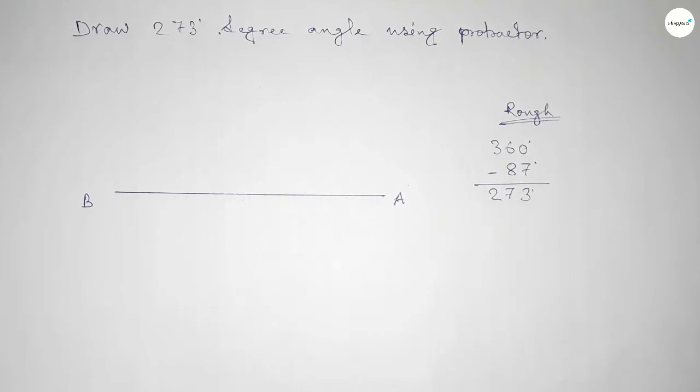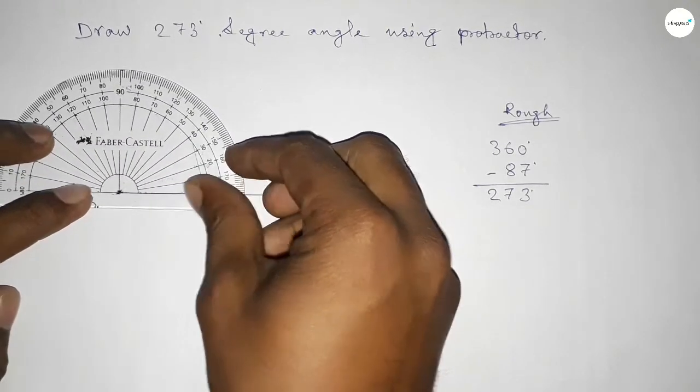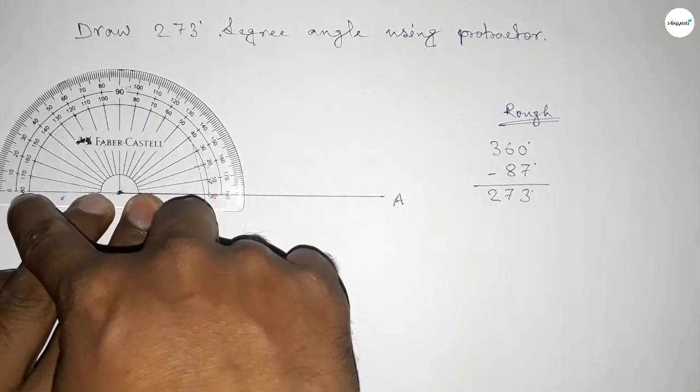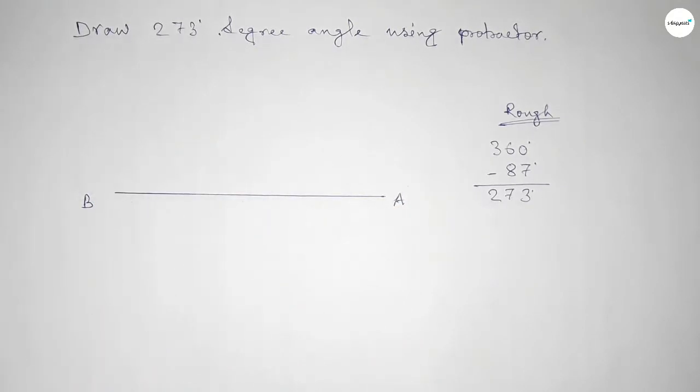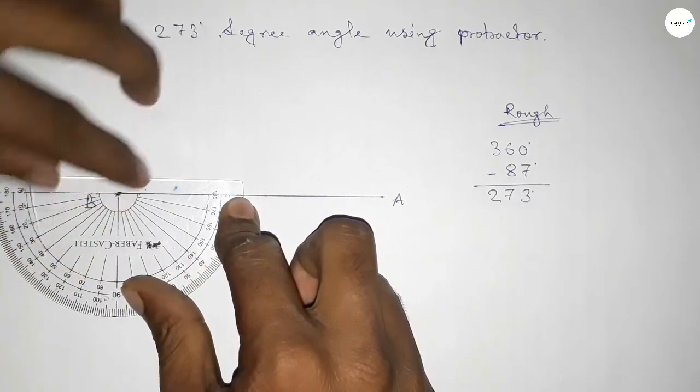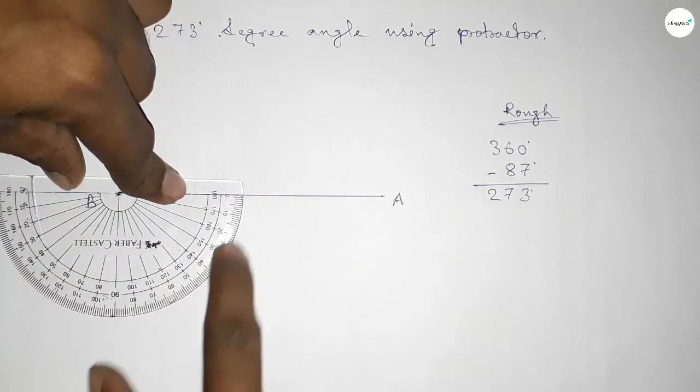So putting the protractor on point B and counting angle. So this is 180 degree angle. Plus putting the protractor on point B by this way and counting angle. So this is total 360 degree angle.